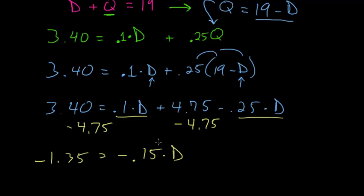Since each side is negative, we can multiply everything by negative 1 to make everything positive. Dividing each side by 0.15 gives us our final answer for the number of dimes. So d equals 9.